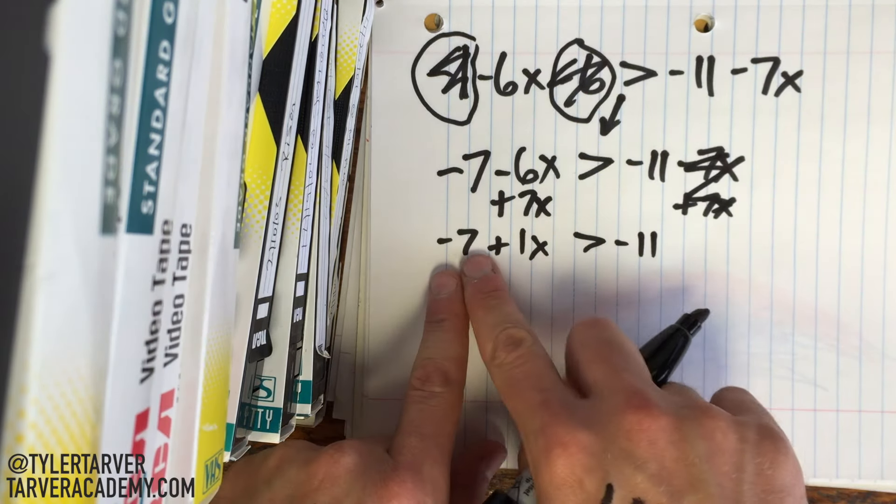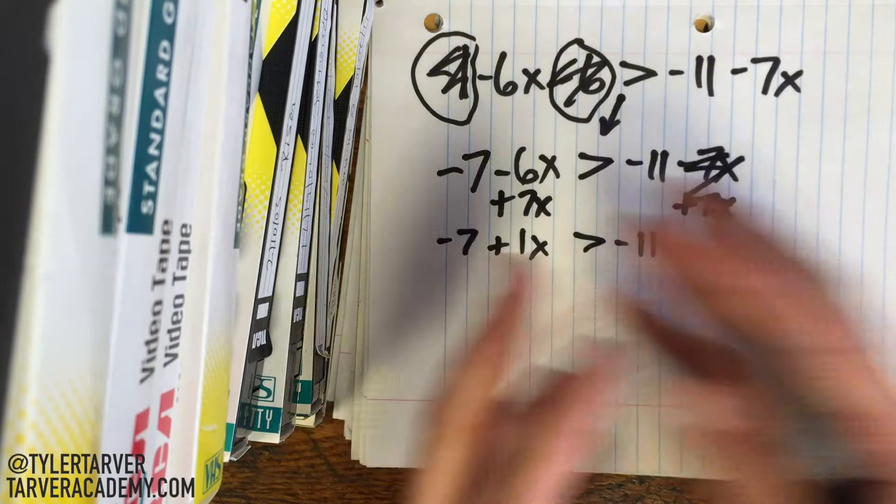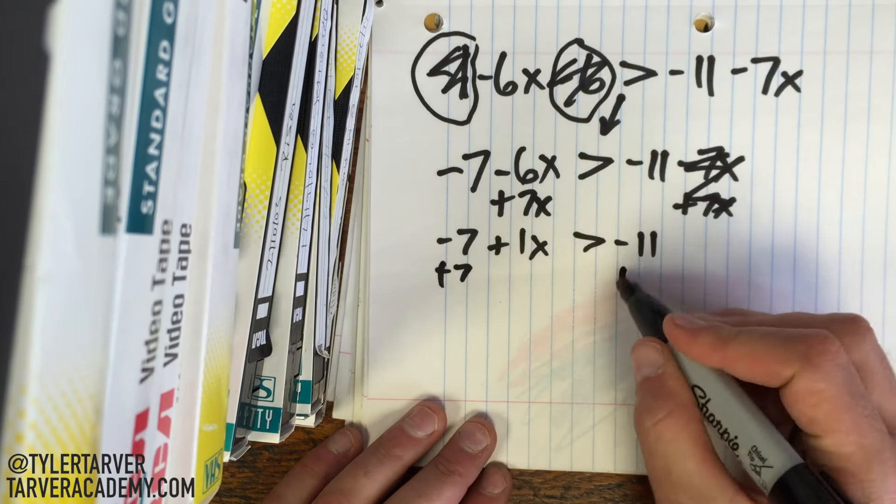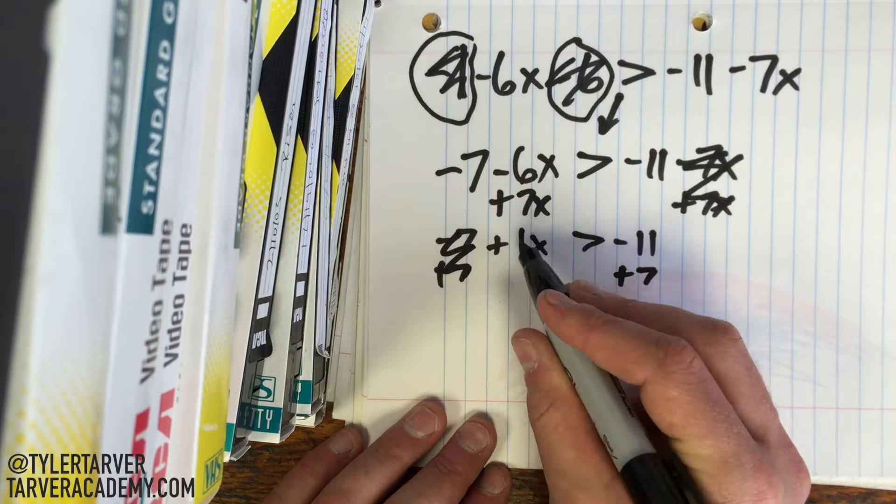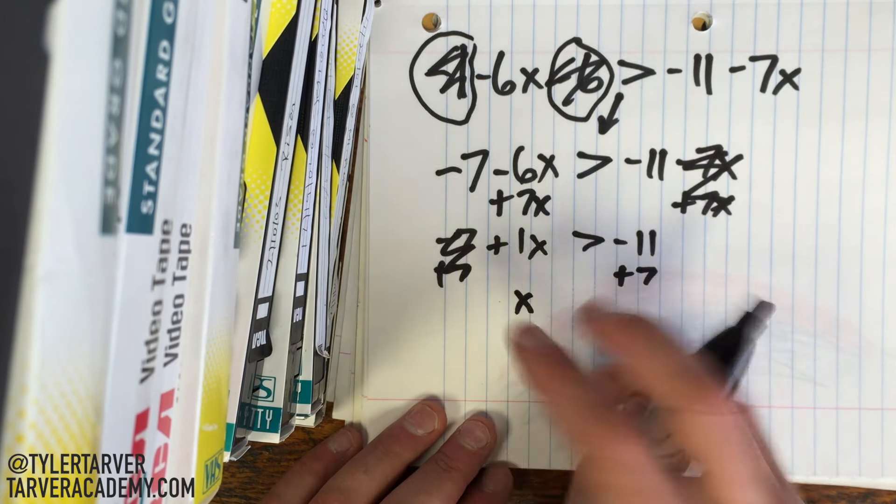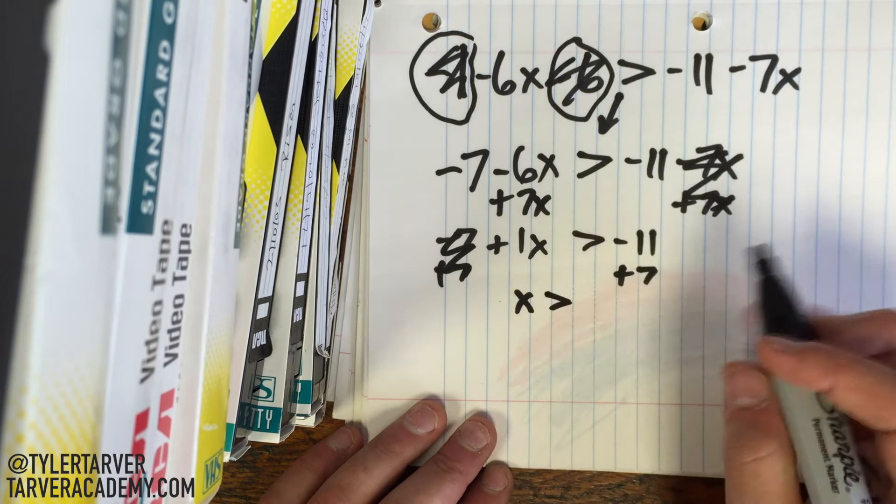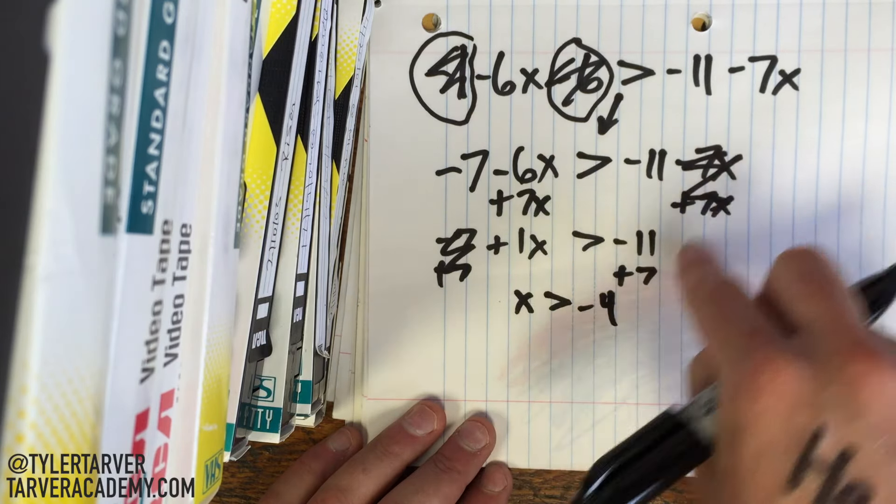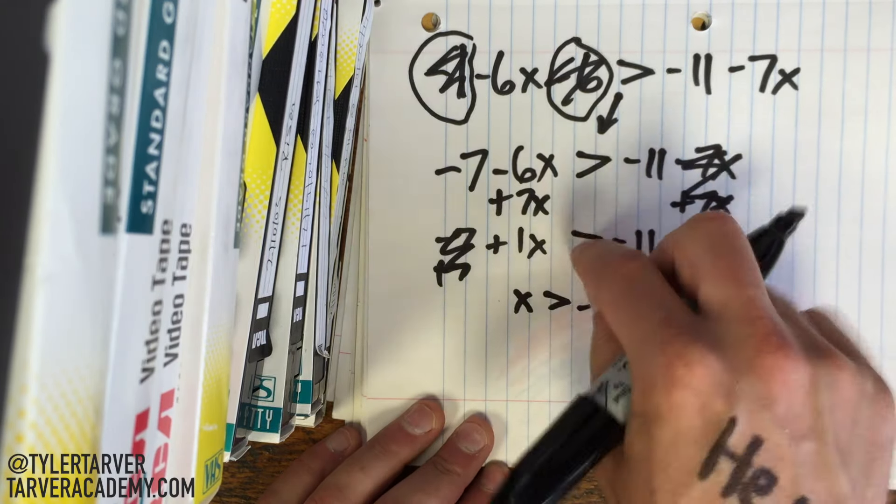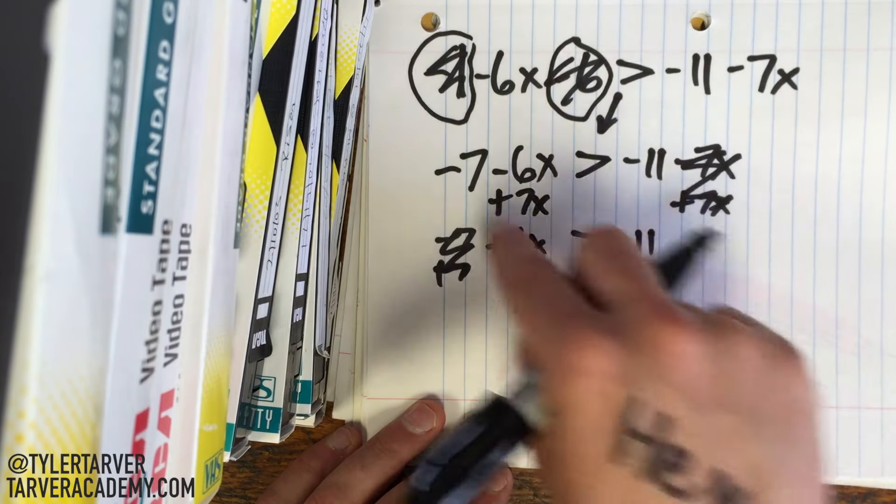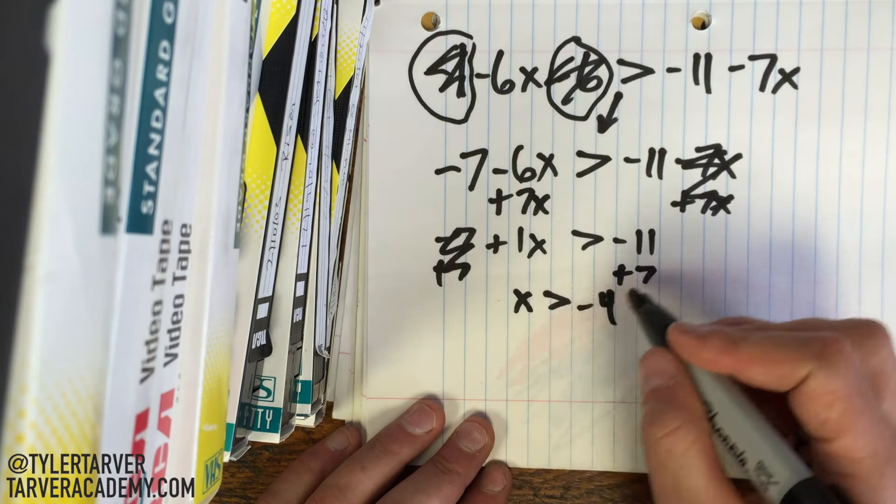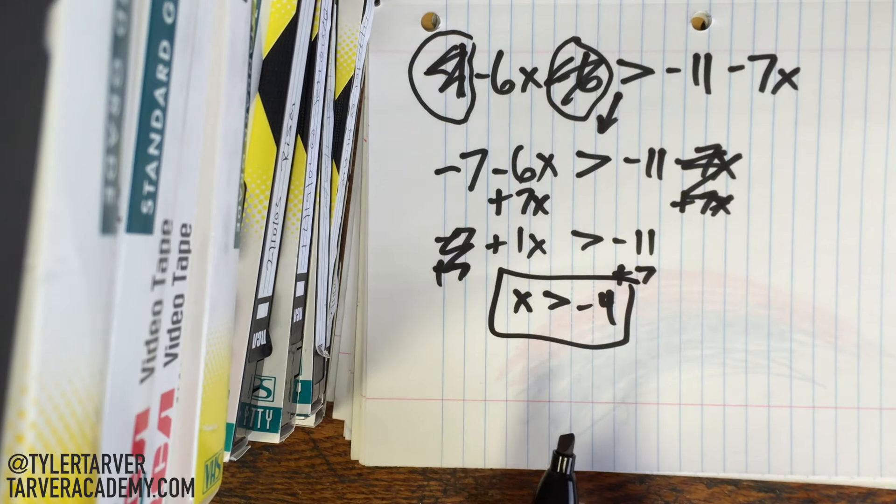That's negative 11. Now I've got to get my regular number to the other side. X's go to one side. Regular numbers go to the other side. So we add 7. Cancels out. I'm going to drop that 1 because we know 1 times anything is just itself. It is greater than negative 4. Now we didn't have to flip the sign because we didn't divide or multiply a negative across the sign. Now we added a negative, but that doesn't mean you switch it up. So x is greater than negative 4. And you have your answer.